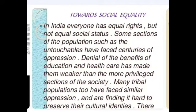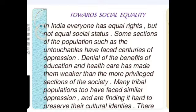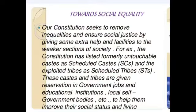Towards social equality: In India everyone has equal rights but not equal social status. Some sections of the population such as the untouchables have faced centuries of oppression. Denial of the benefits of education and healthcare has made them weaker than the more privileged sections of society. Many tribal populations have faced similar oppression and are finding it hard to preserve their cultural identities. The constitution seeks to remove inequalities and ensure social justice by giving extra help and facilities to weaker sections. For example, formerly untouchable castes are listed as scheduled castes and exploited tribes as scheduled tribes, and they are given reservation in government jobs, educational institutions, and local self-government bodies to help improve their social status and living.